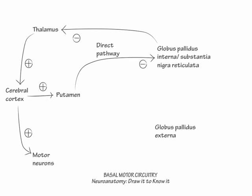Let's draw out the indirect pathway. First, show the putamen inhibit the globus pallidus externa. Then, show the globus pallidus externa inhibit the globus pallidus interna substantia nigra reticulata combination. This is the simplest version of the indirect pathway.